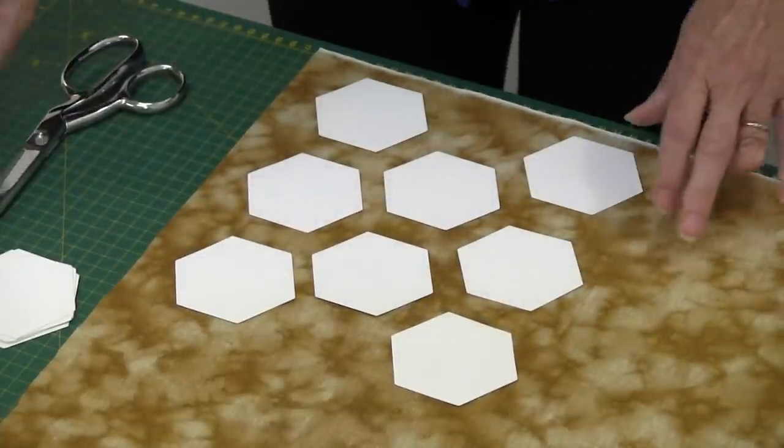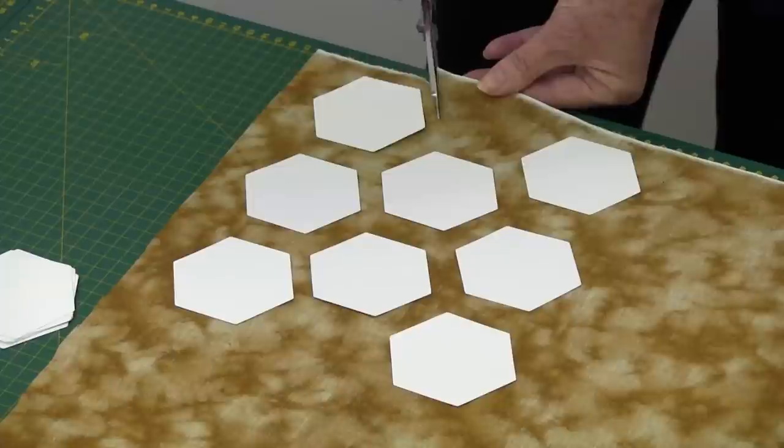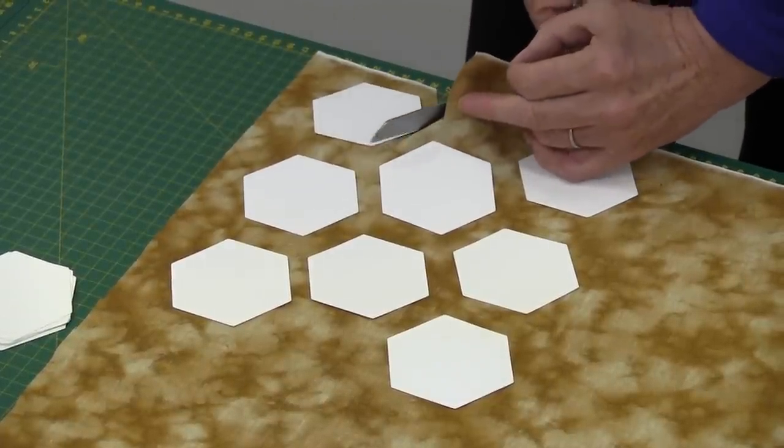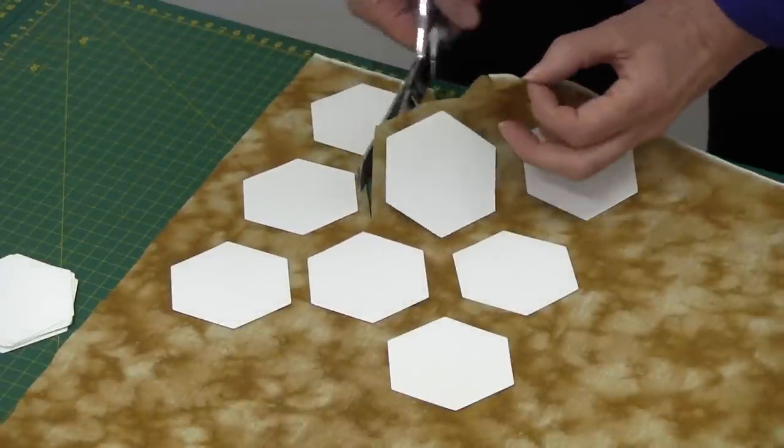We are now ready to cut the fabric out. So if we go in between, angling your scissors, use your fabric scissors, angling in between the paper pieces.